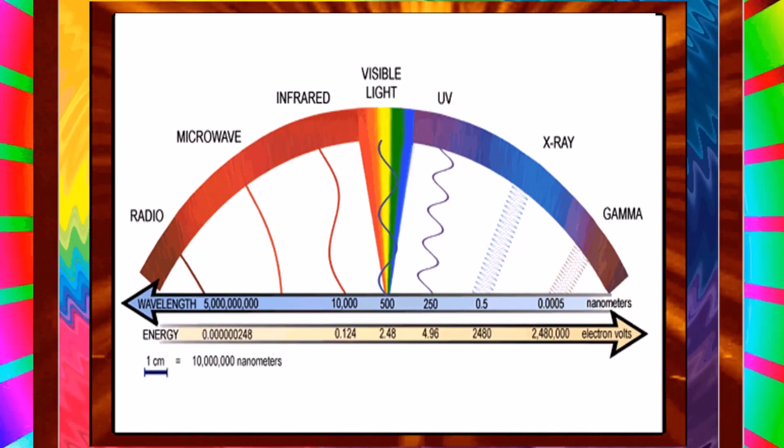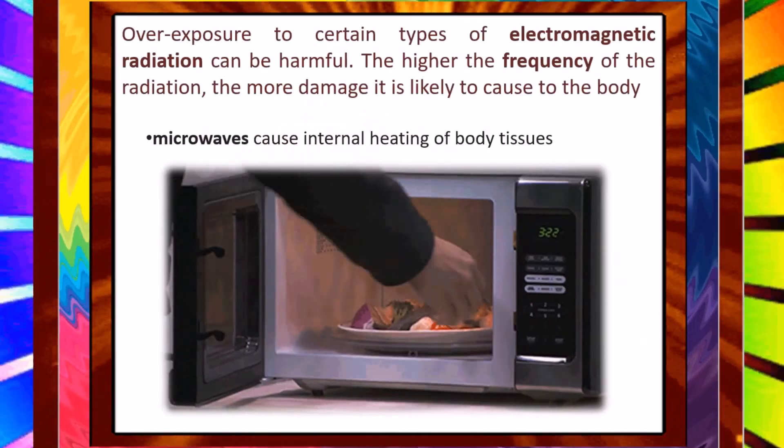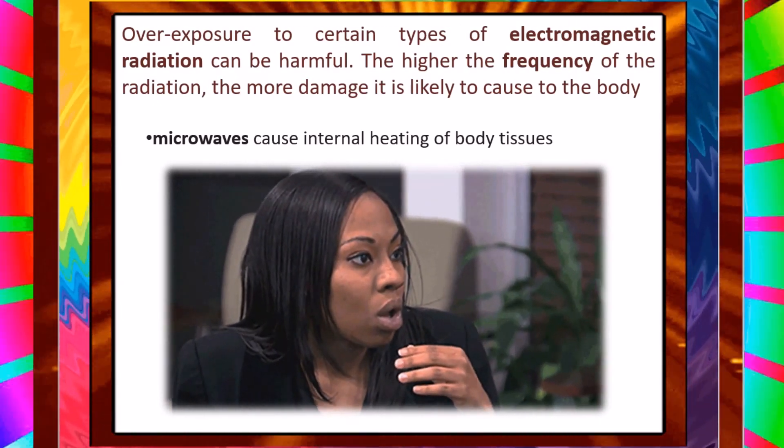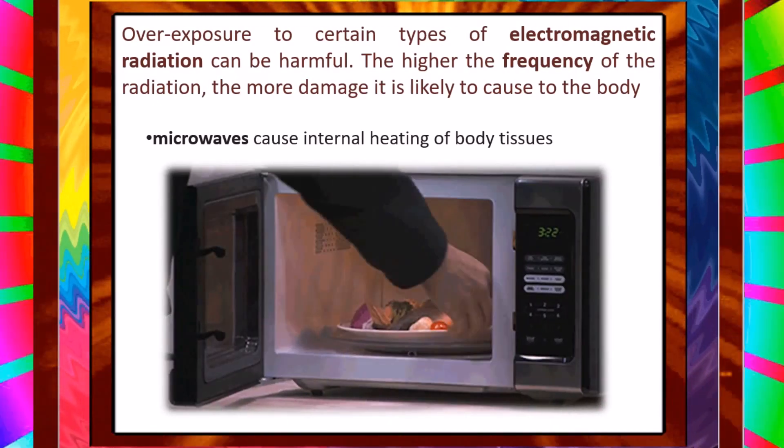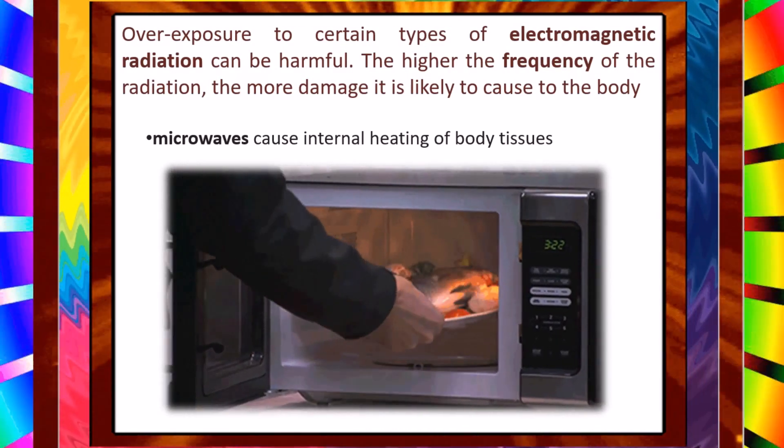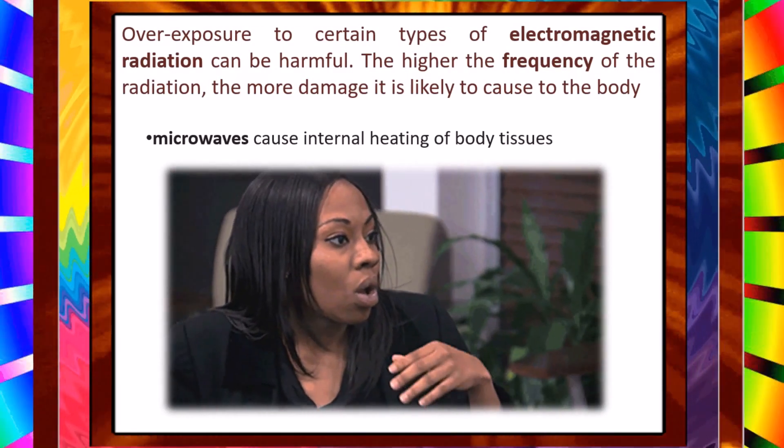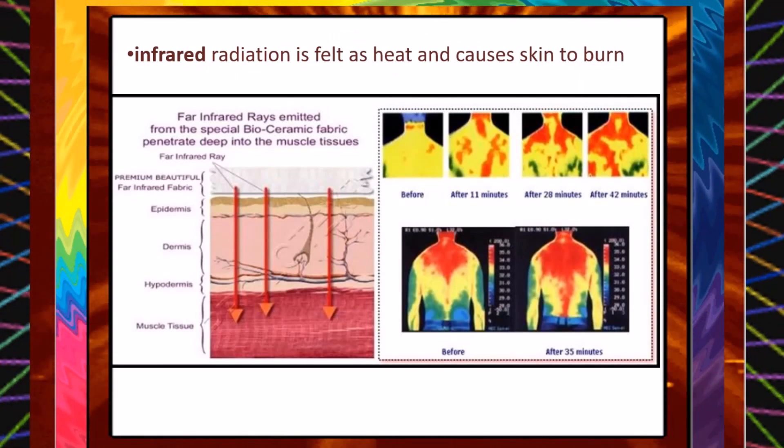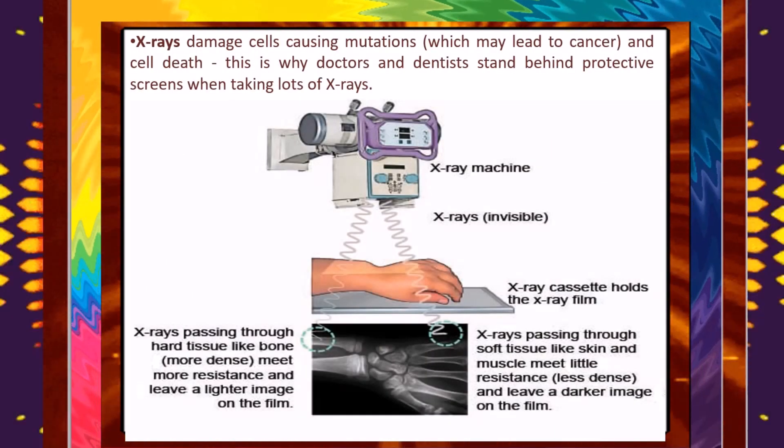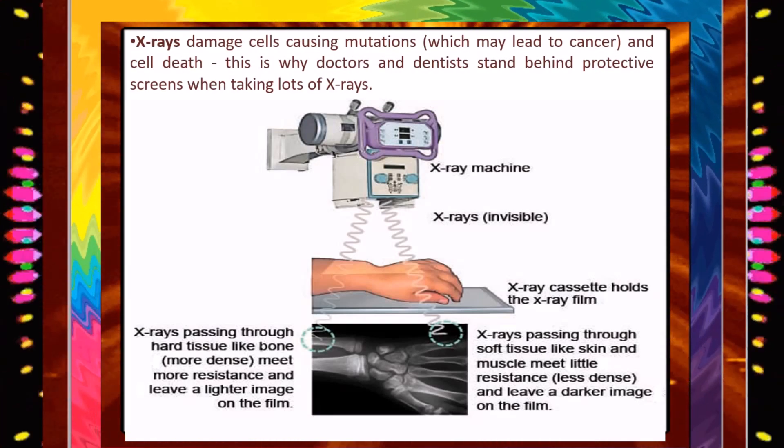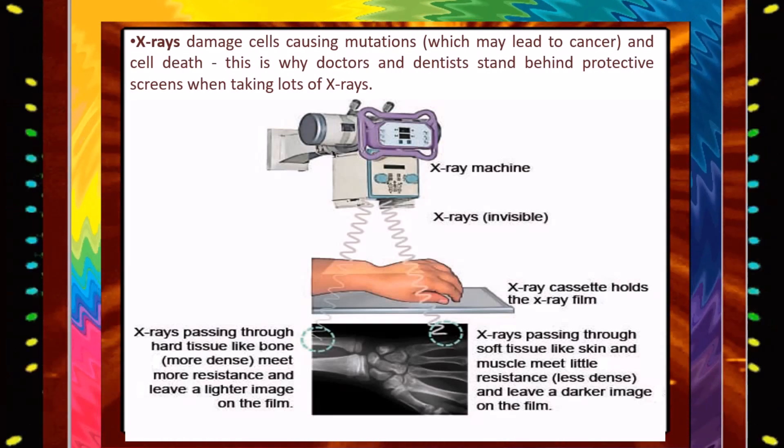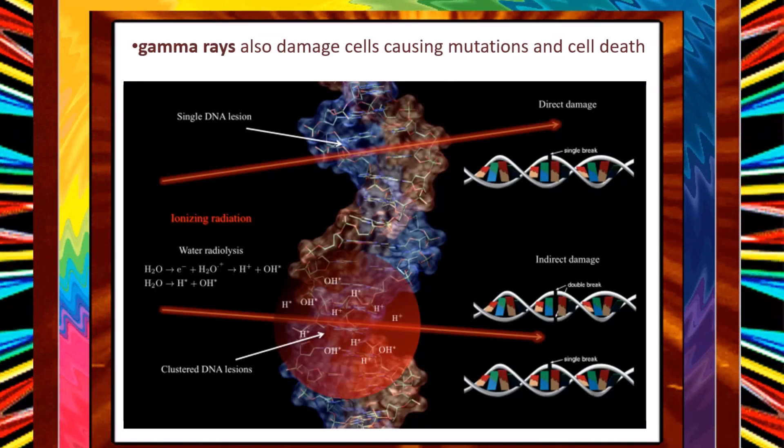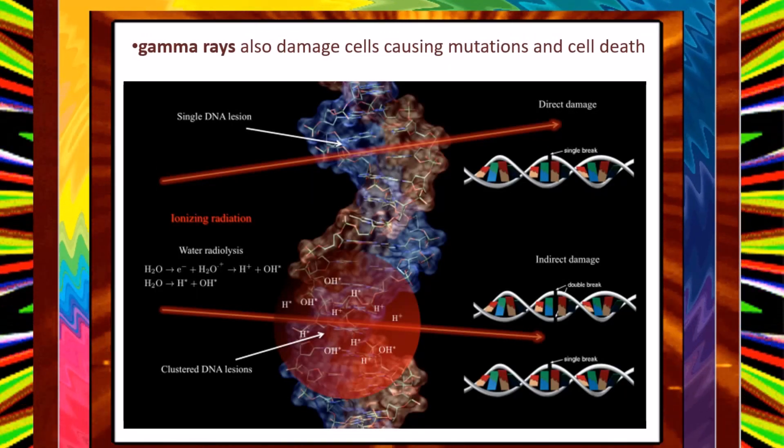Overexposure to certain types of electromagnetic radiation can be harmful. The higher the frequency of the radiation, the more damage it is likely to cause to the body. Microwaves cause internal heating of body tissues. Infrared radiation is felt as heat and causes skin to burn. X-rays damage cells causing mutations, which may lead to cancer and cell death. This is why doctors and dentists stand behind protective screens when taking lots of X-rays. Gamma rays also damage cells causing mutations and cell death.